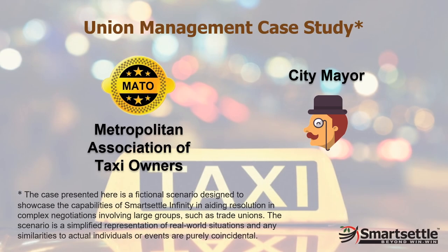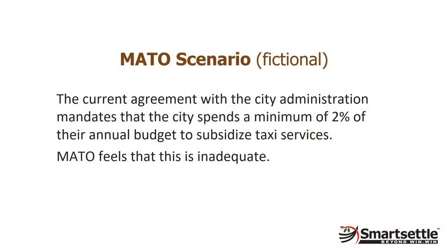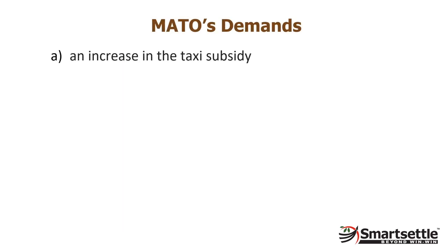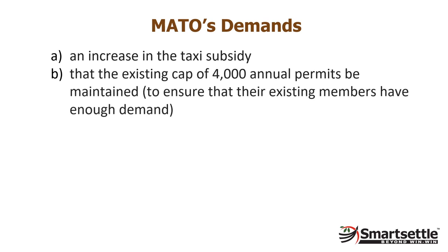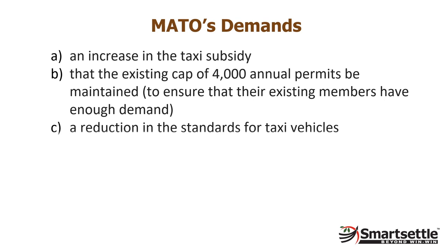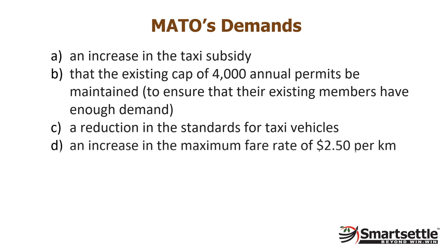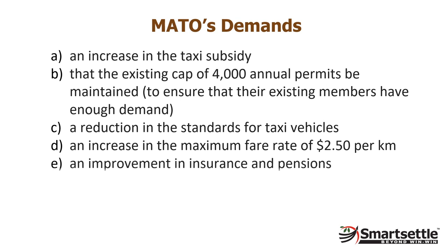We've chosen a union management case study based on a hypothetical but realistic example called METO — the Metropolis Association of Taxi Owners — renegotiating its agreement with the City of Metropolis. The current agreement mandates the City spend a minimum of 2% of their annual budget to subsidize taxi services, which METO feels is inadequate. METO is demanding an increase in the taxi subsidy, that the existing cap of 4,000 annual permits be maintained, a reduction in standards for taxi vehicles, an increase in the maximum fare rate of $2.50 per kilometer, and an improvement in insurance and pensions. The leader of METO has threatened protest activity.